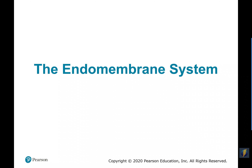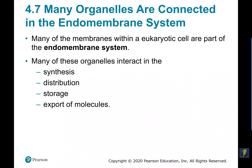As part of that synthesis and distribution network, we have something called the endomembrane system. It involves a whole set of different organelles inside the cell, and they're all connected to each other through the use of what we call a vesicle, which is essentially just a sac made of phospholipids. The endomembrane system helps make different things for the cell, distributes them to other parts of the cell or out of the cell, and also stores different molecules and exports things.